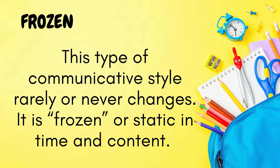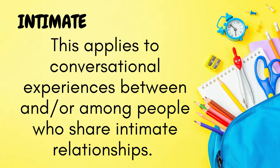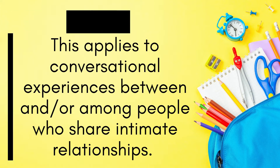The fourth one is frozen. From the word itself, this type of communicative style rarely or never changes. It is frozen or static in time and content. And number five is intimate. This type of communicative style applies to experiences between and or among people who share intimate relationships. Usually done in private, it shows no social boundaries among the speakers considering their intimacy. This also employs informal and intimate language. Examples are shown.